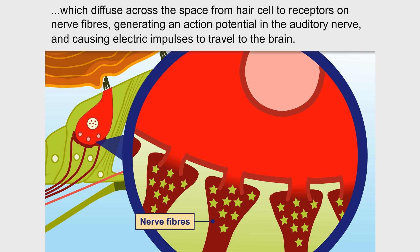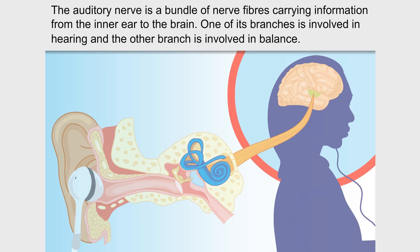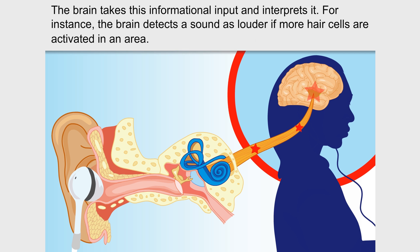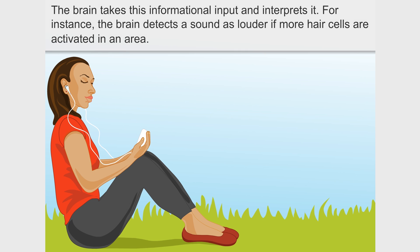This generates an action potential in the auditory nerve, causing electric impulses to travel to the brain. The auditory nerve is a bundle of nerve fibres carrying information from the inner ear to the brain. One of its branches is involved in hearing and the other branch is involved in balance. The brain takes this informational input and interprets it — for instance, the brain detects a sound as louder if more hair cells are activated in an area.